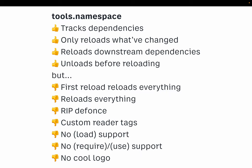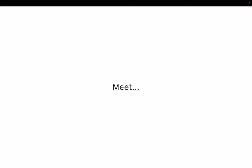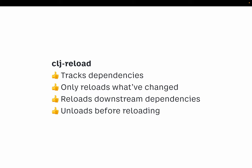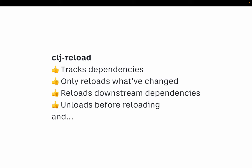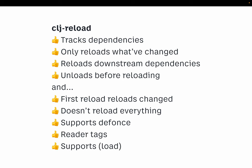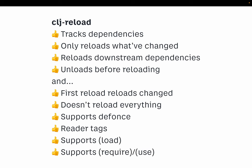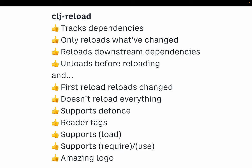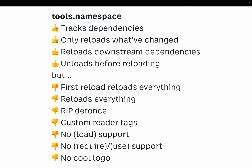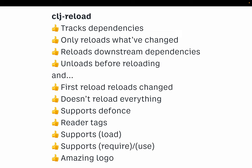So what do we do? We write our own library. Meet CLJ Reload. All the same basic boxes are checked, and all the problems we just listed with tools.namespace are fixed. I chose them so I can fix them and then do a presentation — so no wonder we have all thumbs up, including an amazing log. tools.namespace: thumbs down. CLJ Reload: thumbs up.